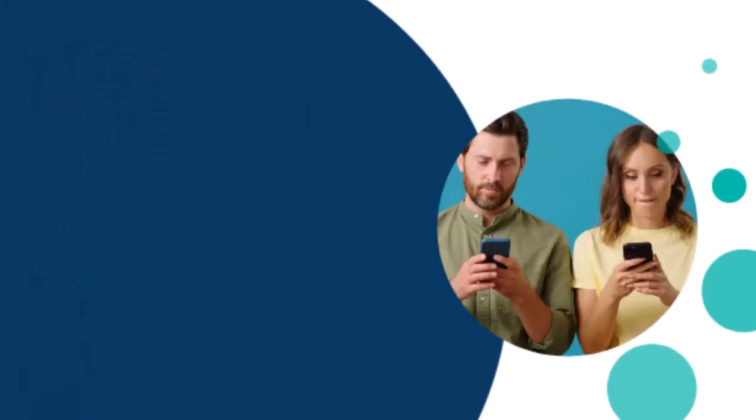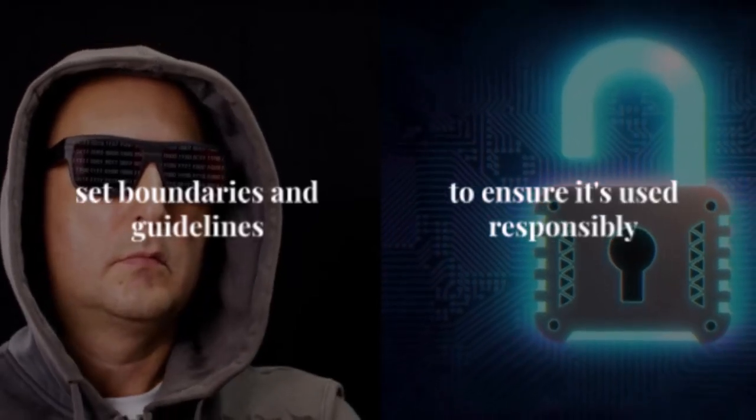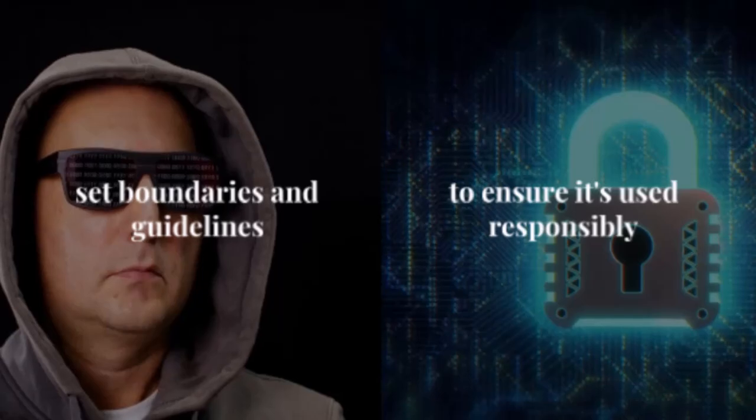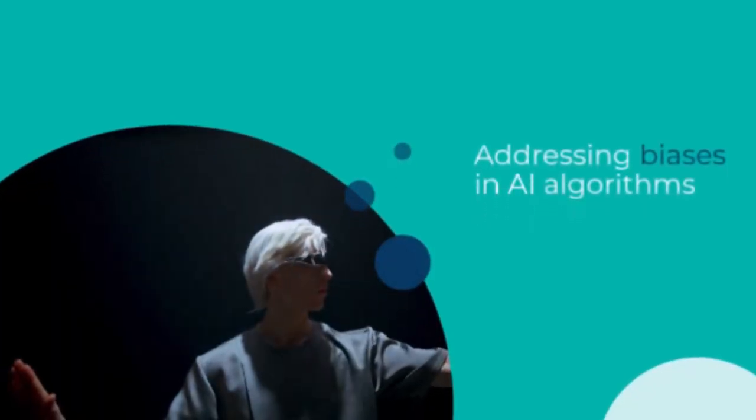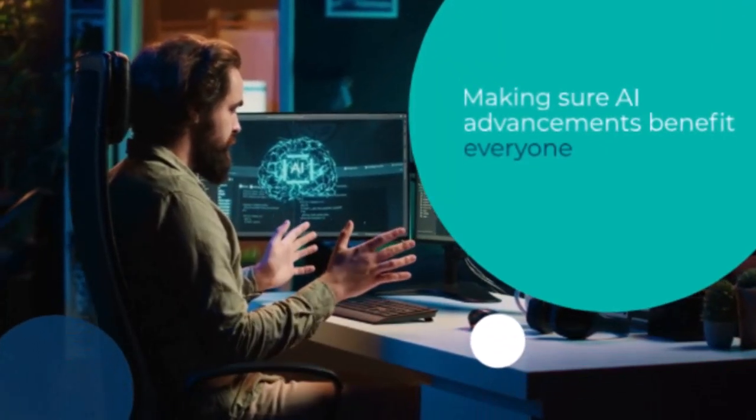We also need to talk about the ethical side of things. As AI continues to evolve, it's crucial that we set boundaries and guidelines to ensure it's used responsibly. This includes addressing biases in AI algorithms, ensuring data privacy, and making sure AI advancements benefit everyone, not just a select few.